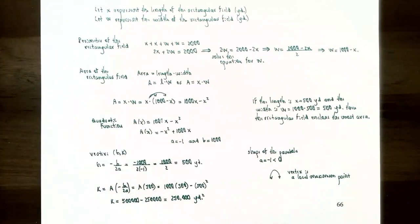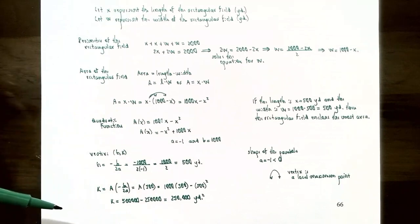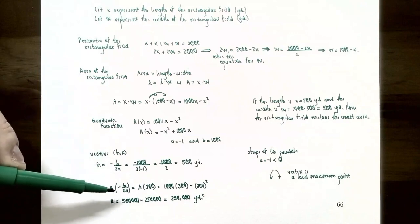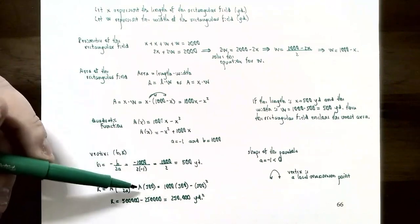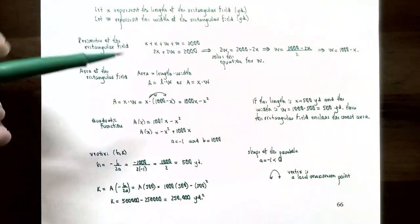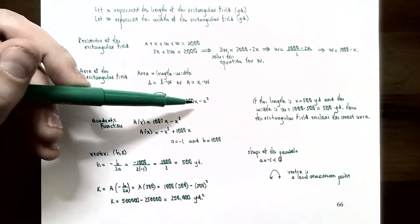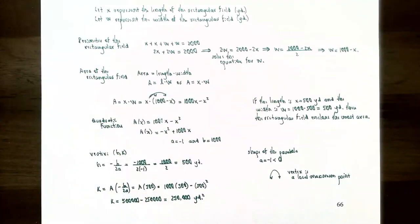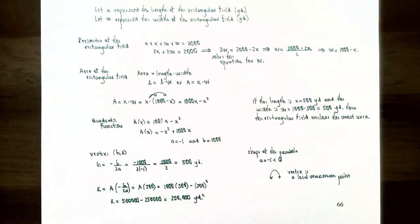Now find the maximum area — the y-coordinate of the vertex. Evaluate A(500): 1000(500) - 500² = 500,000 - 250,000 = 250,000 square yards. So the maximum area is 250,000 square yards.